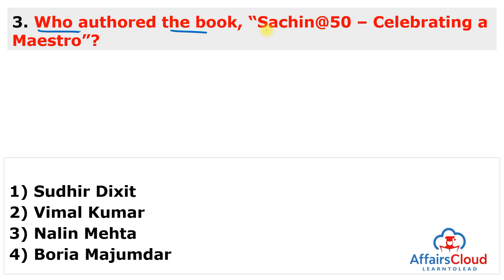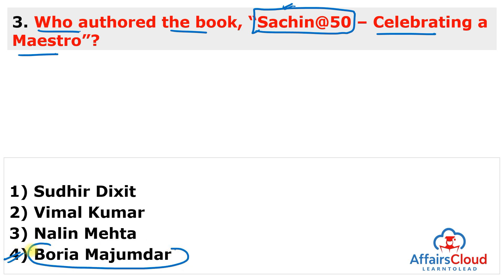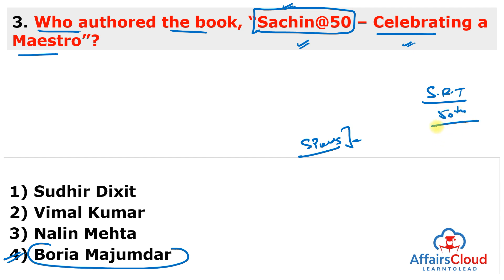Next question: Who authored the book 'Sachin@50'? By the name, you can guess this is related to Sachin Tendulkar celebrating his 50th birthday. This book is authored by renowned sports historian and journalist Boria Majumdar. The book was released on the occasion of India's former international cricketer Sachin Ramesh Tendulkar's 50th birthday, celebrated on 24th April 2023. It was conceptually designed and curated by Majumdar, with a special back cover note penned by Gulzar. The book covers Sachin's journey, beginning with his teenage debut and the famous blooded-nose incident in Pakistan in 1989.